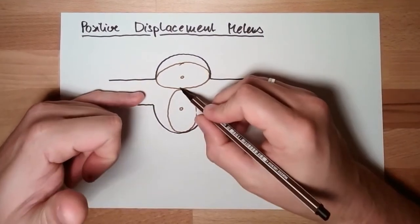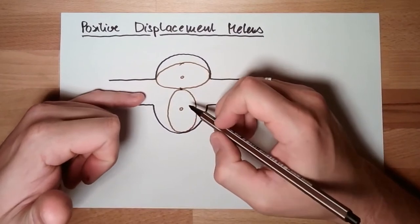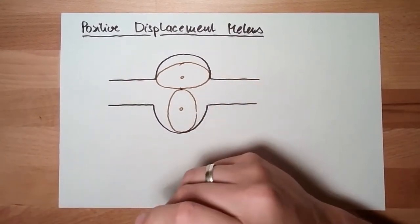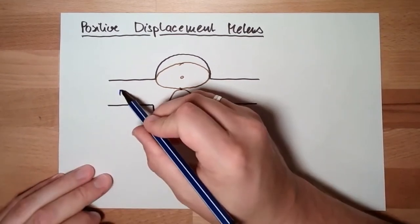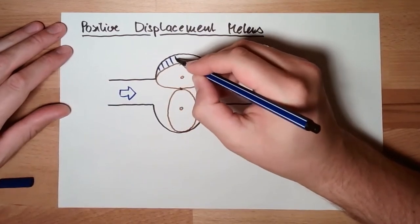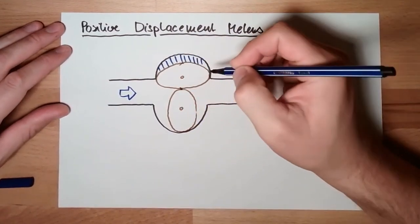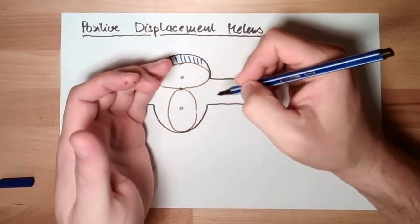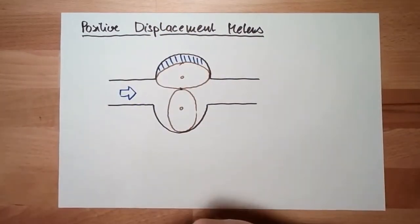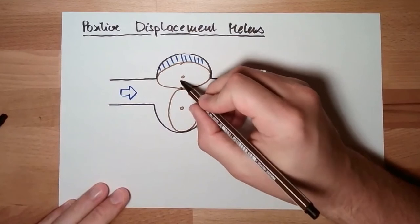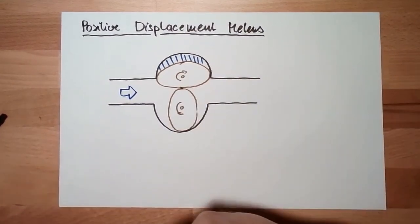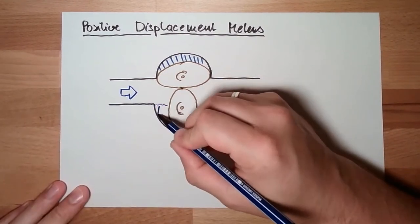Whenever they are sealed, nothing can pass. Whenever there is flow, it needs to pass in these chambers. So right now a part is passing here. If it is moving further, this thing here is moving and this thing here is moving in that direction. This is also already filled, this part.